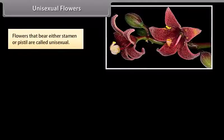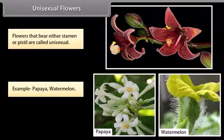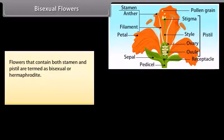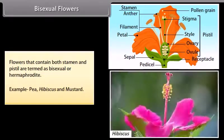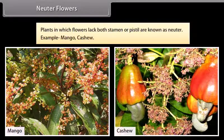Flowers that bear either stamen or pistil are called unisexual. Examples include papaya and watermelon. Flowers that contain both stamen and pistil are termed bisexual or hermaphrodite. Examples include pea, hibiscus, and mustard.